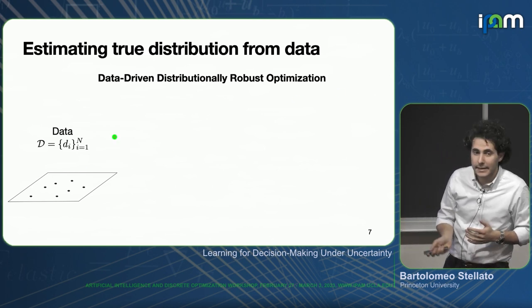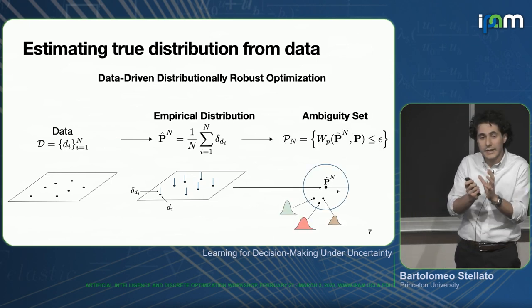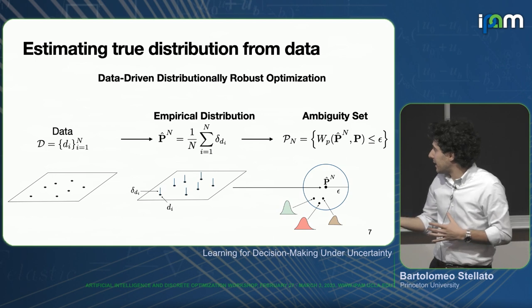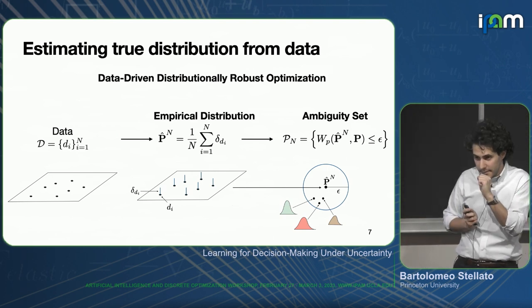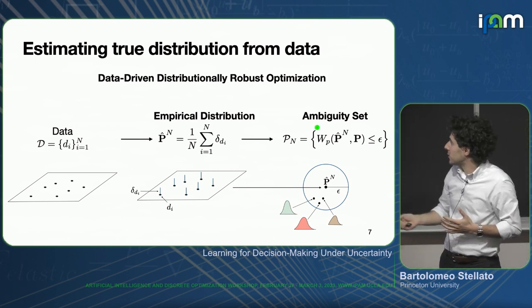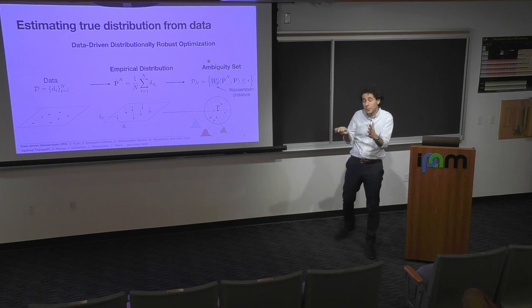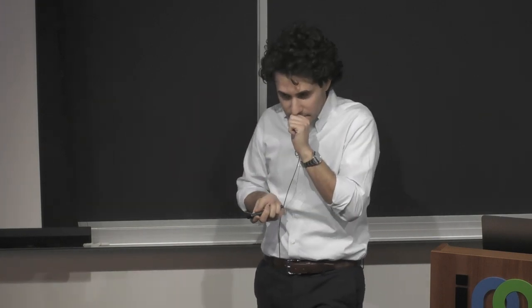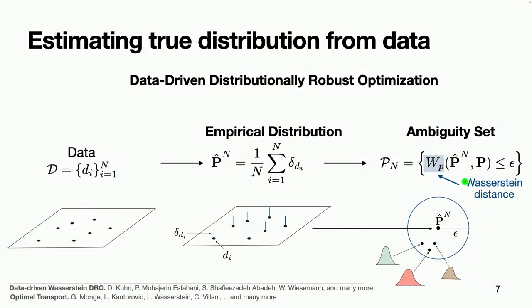The ambiguity set is a ball where the center is the empirical probability distribution and epsilon is the radius. You don't know the true probability distribution, but you assume it lives in a set that is not too far from the empirical one. The distance is measured using the Wasserstein metric w, with p being the power that defines this distance. This is becoming super popular, has lots of interesting connections with optimal transport theory, and is a very elegant way to build estimates of probability distributions using just data.